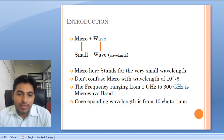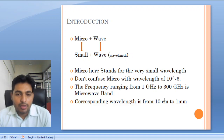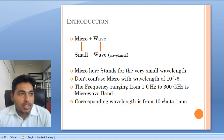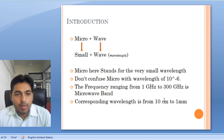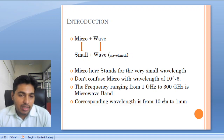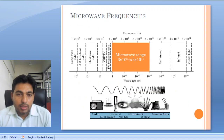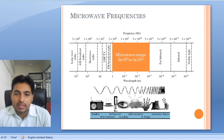The frequency range from 1 GHz to 300 GHz is called the microwave band, whose corresponding wavelength is from 10 cm to 1 mm. And beyond this 1 mm band there is a millimeter wave band. So this is the frequency band — you can say this is the spectrum.